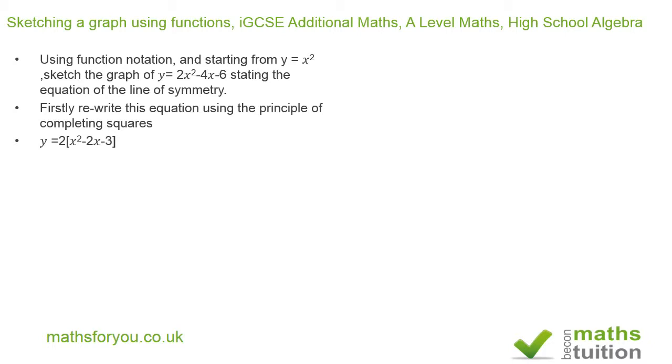Now for the inner bracket I can do the usual completing squares. That involves using half the coefficient of x. In this case minus 2, half of minus 2 is minus 1, and we do x minus 1 all squared. When we open up these brackets, the x minus 1 all squared, we're going to end up with plus 1, so we need to subtract 1 there.